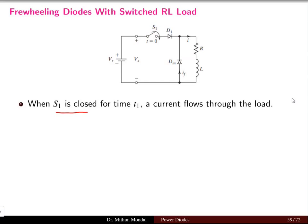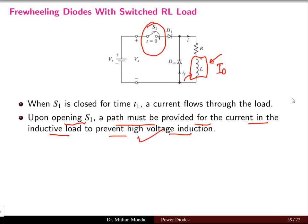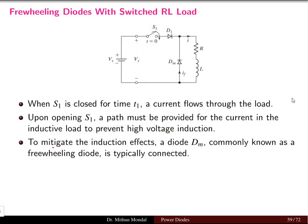When switch S1 is closed at time T1, current starts flowing through the load. When the switch is opened, a path must be provided for the current in the inductive load to prevent high voltage induction. The inductor stores energy in the magnetic field, and this energy must be dissipated to prevent high voltage induction. The path is given through the freewheeling diode. To mitigate the induction effect, diode DM — commonly known as the freewheeling diode — is typically connected in parallel with the main RL load.